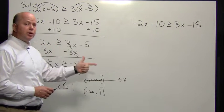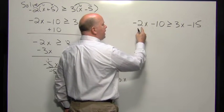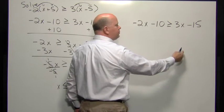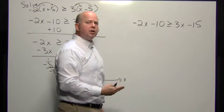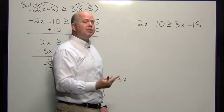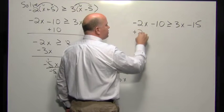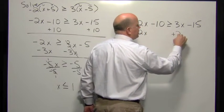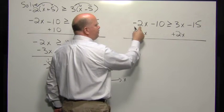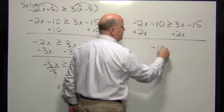We could move this variable over to the right and have positive coefficients as we solve, so we wouldn't need to worry about multiplying or dividing by a negative number. If we added 2x to both sides of this inequality, 2x minus 2x is zero, and zero plus negative 10 is negative 10.